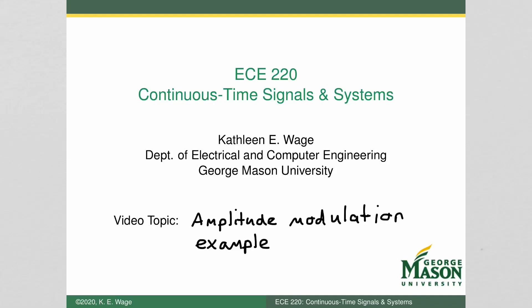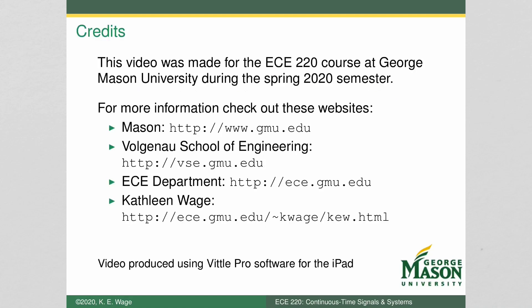Hi everyone, and welcome back to another Continuous Time Signals and Systems video. The topic of today's video is an amplitude modulation example. This video was made for the ECE220 course at George Mason University during our Spring 2020 semester. For more information about Mason and the department, you can check out these websites.